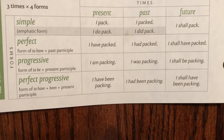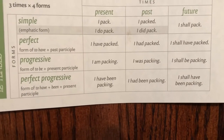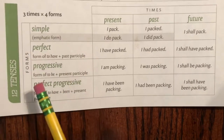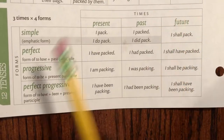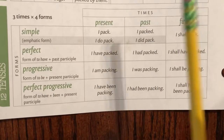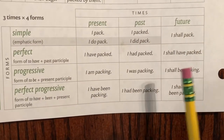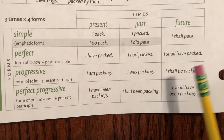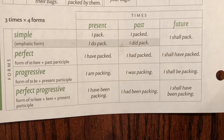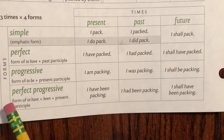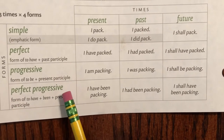12 verb tenses. Progressive present: I am packing. Progressive past: I was packing. Progressive future: I shall be packing. 12 verb tenses — perfect progressive.